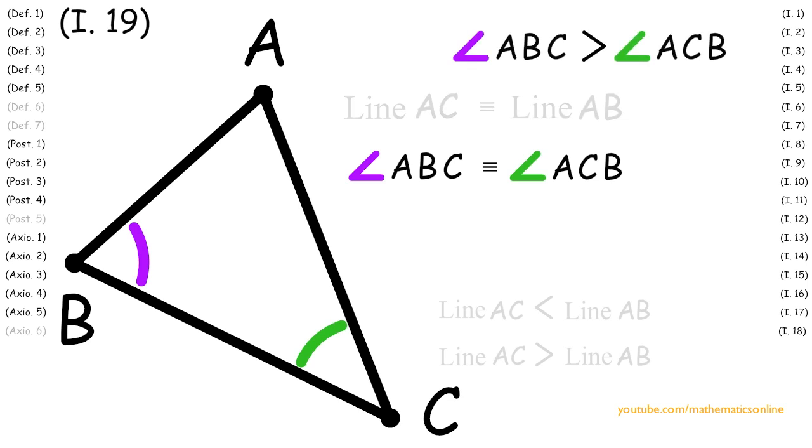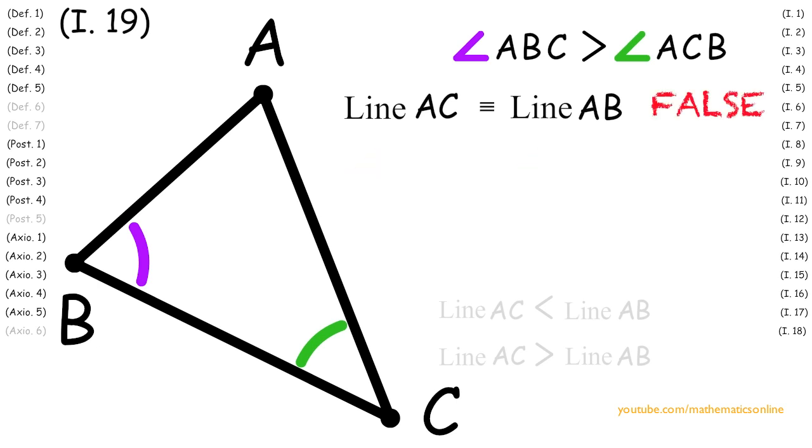But we also have that angle ABC is greater than angle ACB. It's not possible to have both true at the same time, so we have a contradiction. The reason we have this contradiction is because we assumed that line AC is congruent to line AB. So this statement must be false.